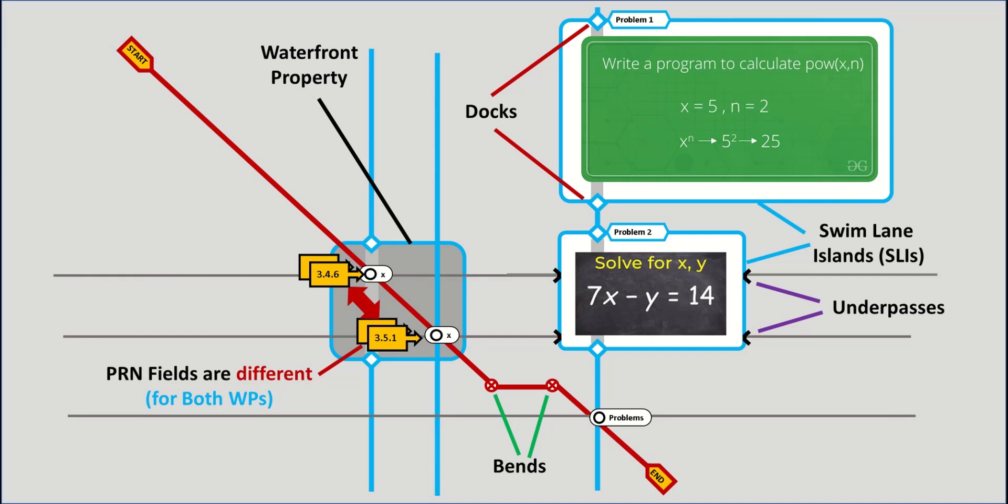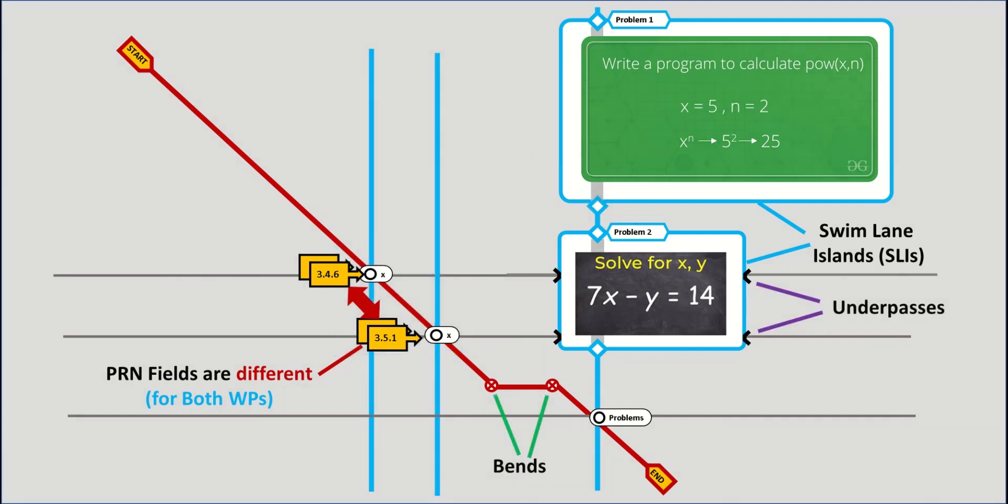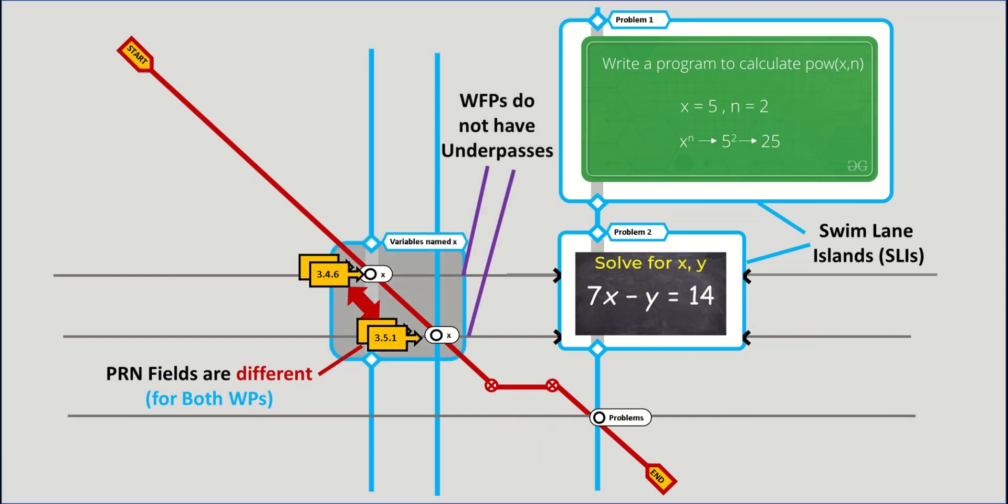But just how is a Swimlane Island all that different from a waterfront property? That is an excellent question, even if any discussion on that I had originally planned to defer to some later time. And while these two, Swimlane Islands and waterfront properties, do in fact have many similar properties, such as they both have docks and name fields, though those are optional for the waterfront properties, they also have their differences as well. For example, SLIs have underpasses, though let me defer discussing what those are for later. But waterfront properties do not.